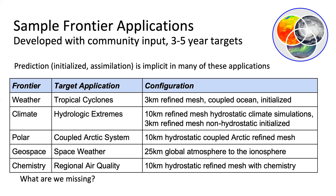We've developed with community input sample frontier applications. Many of these are prediction-focused. These include simulating tropical cyclones with a 3-kilometer refined mesh coupled ocean initialized modeling; simulating hydrologic extremes with a 10-kilometer refined mesh or 3-kilometer non-hydrostatic initialized simulation; a coupled Arctic system model with 10-kilometer coupled atmosphere coupled to ocean, land, land ice, and sea ice models; a geospace application with a 25-kilometer global atmosphere model extending all the way to the ionosphere; and regional air quality simulations at 10 kilometers using a refined mesh. One question for the workshop is: what are we missing?